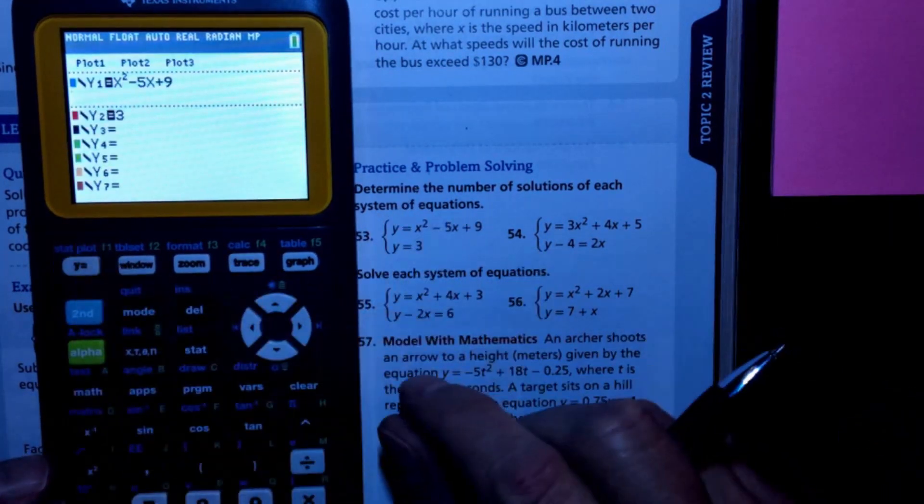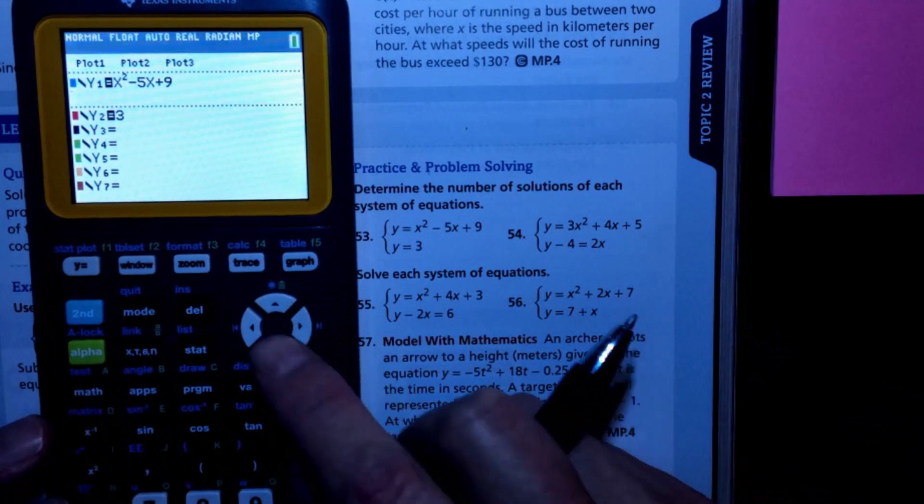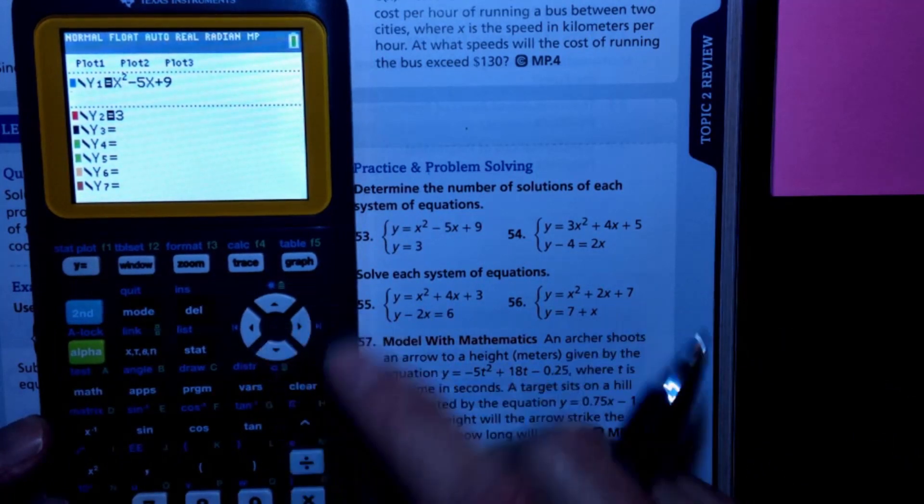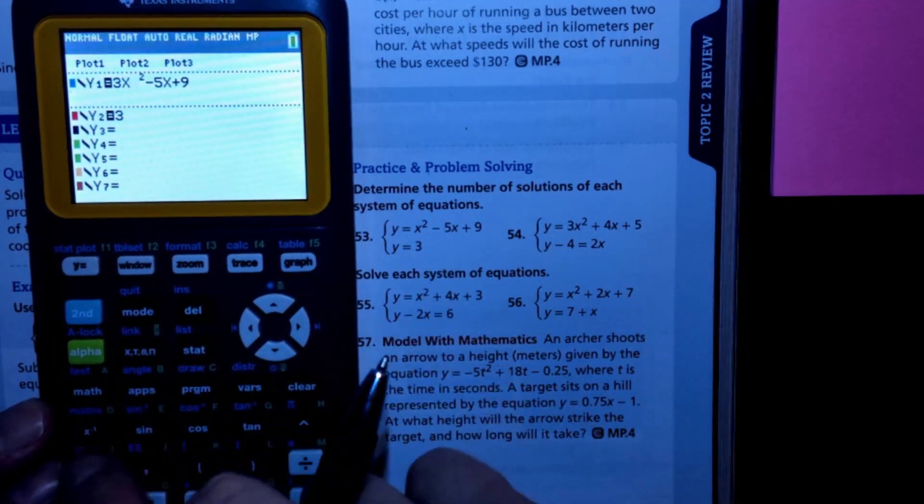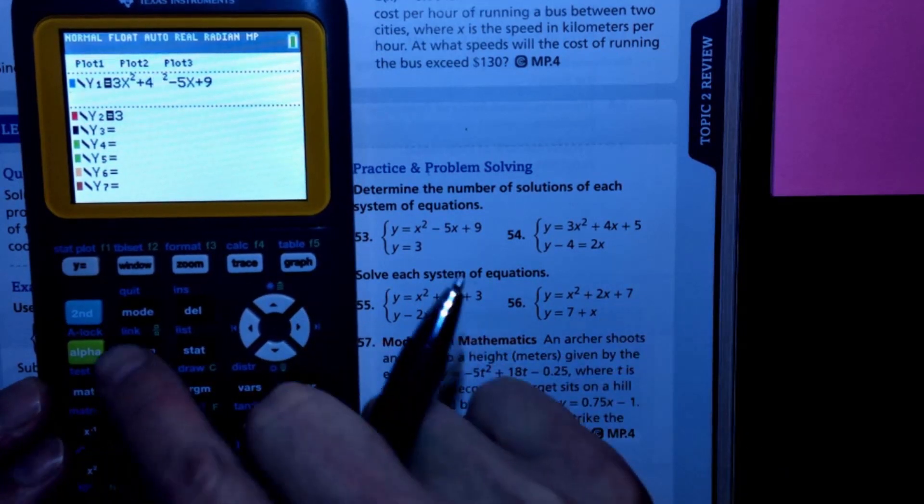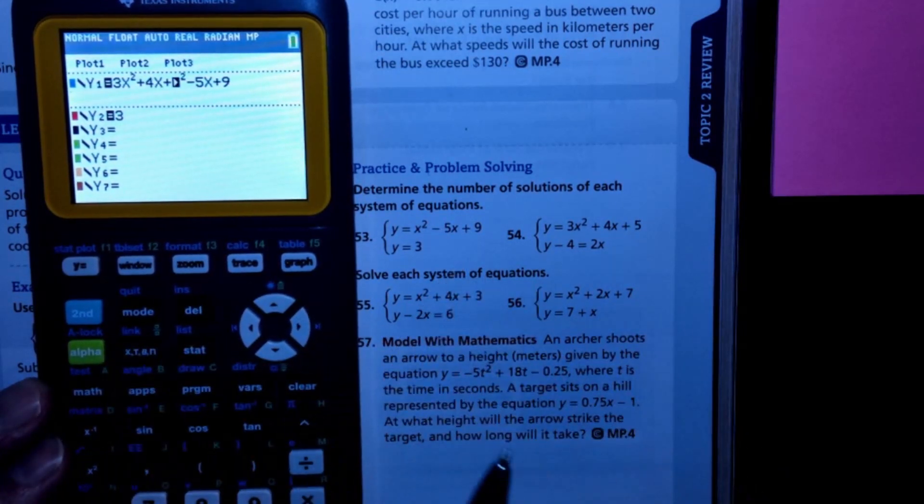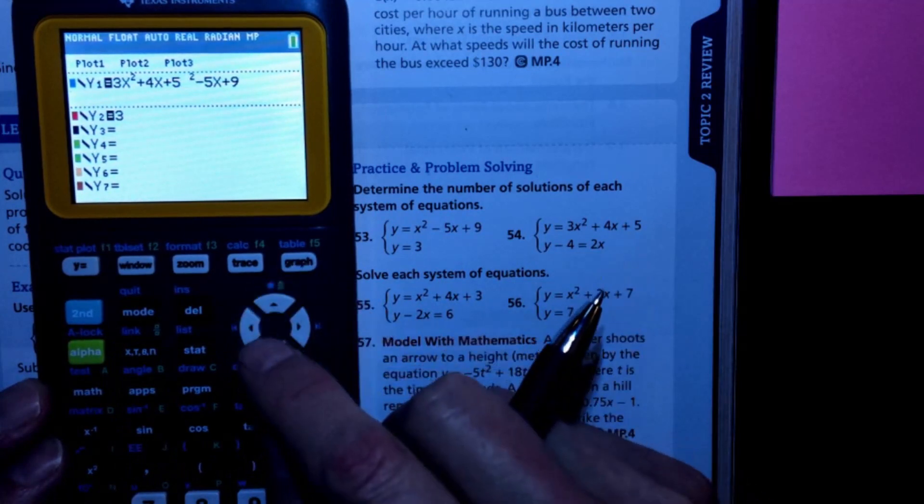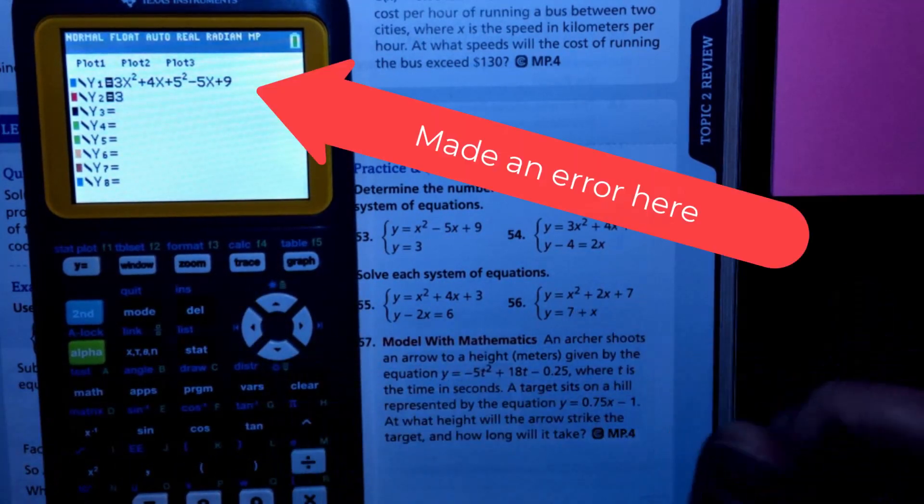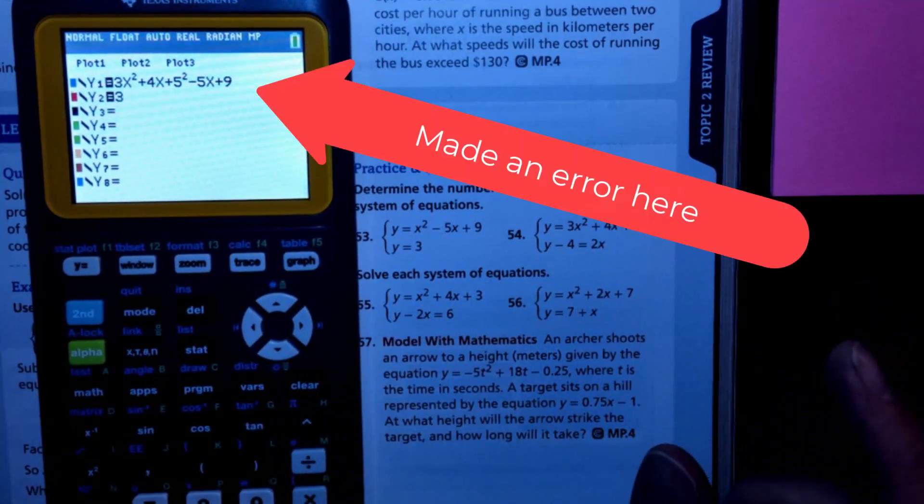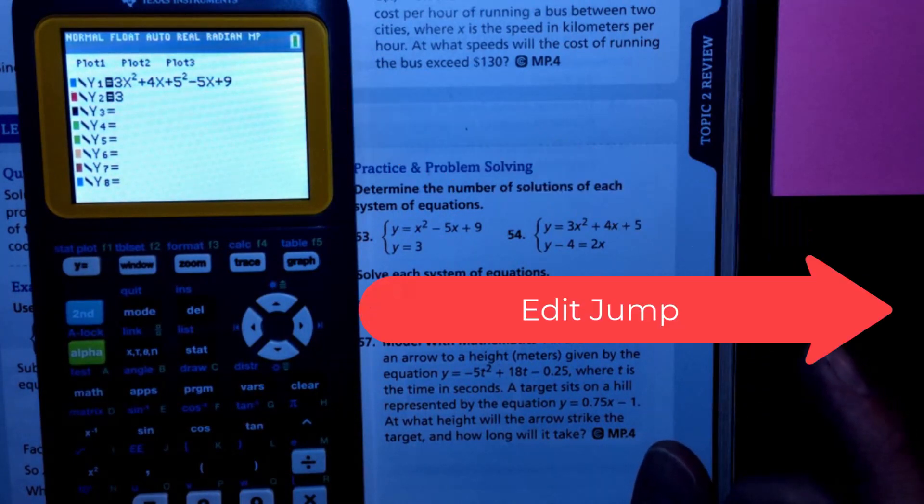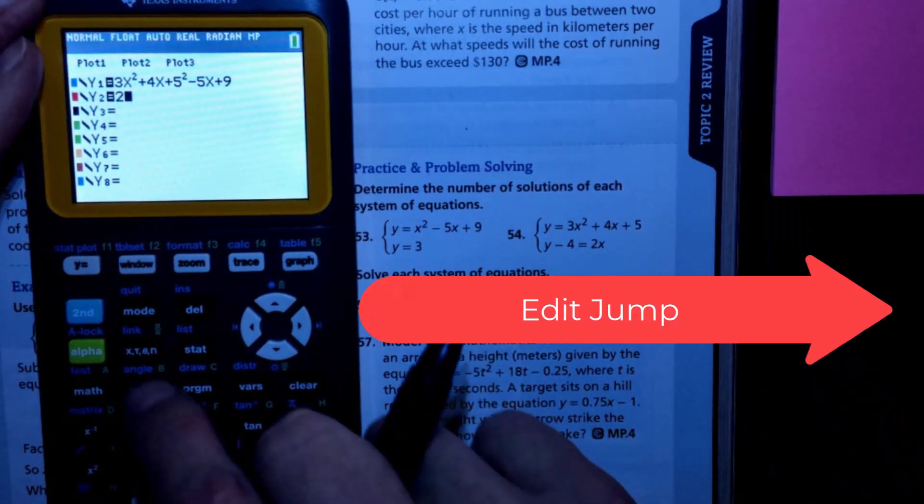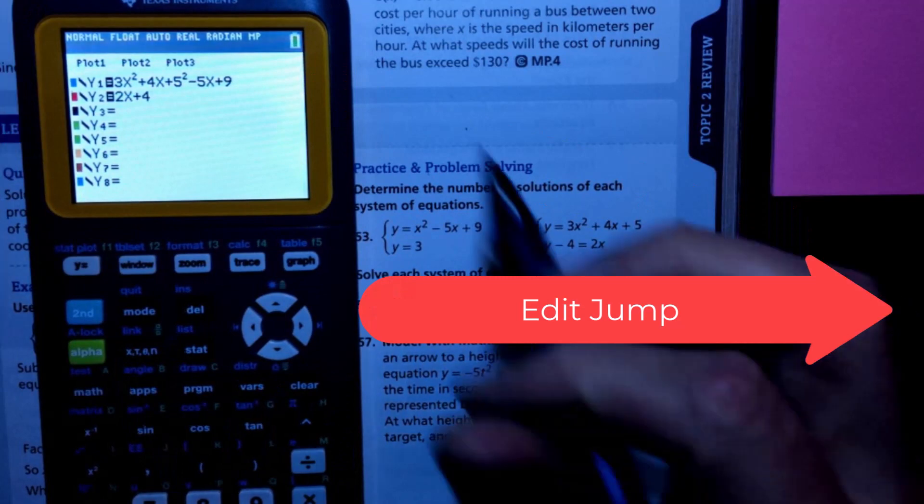Now 54 looks like things are a little different. It looks like I've got 3x squared, so 3x squared plus 4x plus 5, and that's one. Now this guy is not set up right. I have to move the negative 4 over to the other side where he'll become a positive 4, so that would be 2x plus positive 4.